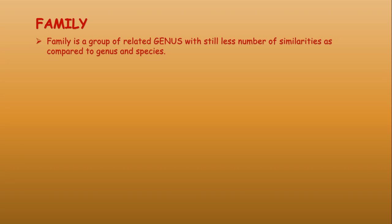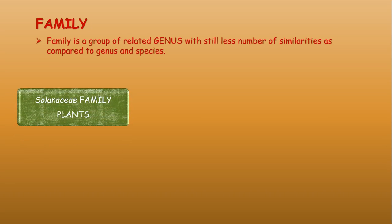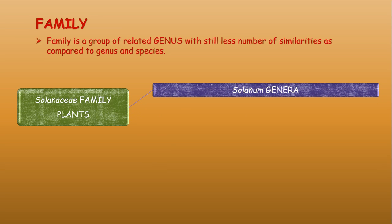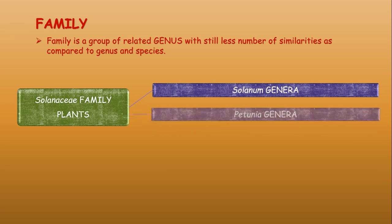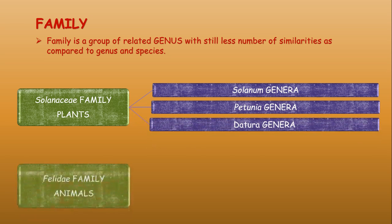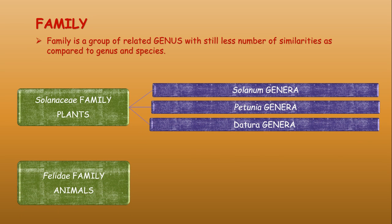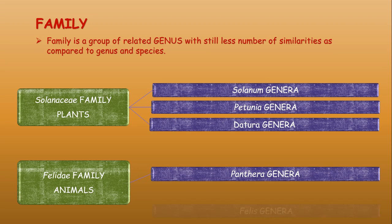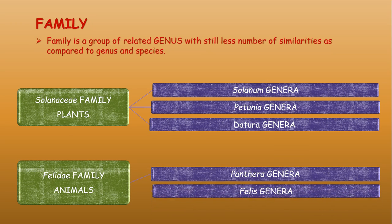Family is a group of related genera that has still fewer similarities than genus and species. For plants, an example is the Solanaceae family, which includes the genera Solanum, Petunia, and Datura. For animals, an example is the Felidae family, which includes the genera Panthera and Felis.